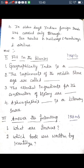Fill in the blanks section: Geographically, India is a — blank — peninsula. The implements of the Middle Stone Age are called microliths. The essential ingredients for the construction of history are sources. Ashwagosha's literary source is his Buddhacharita.